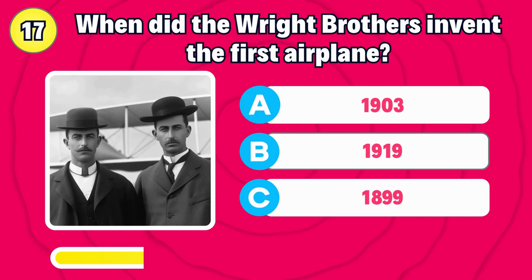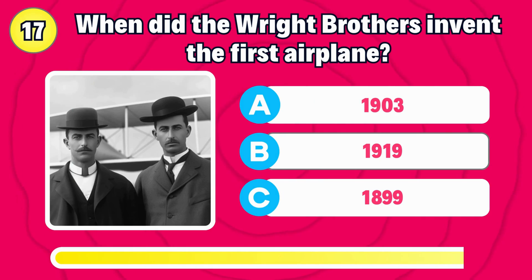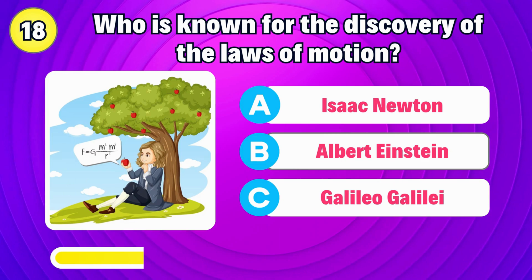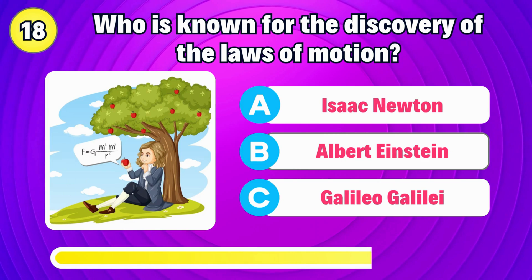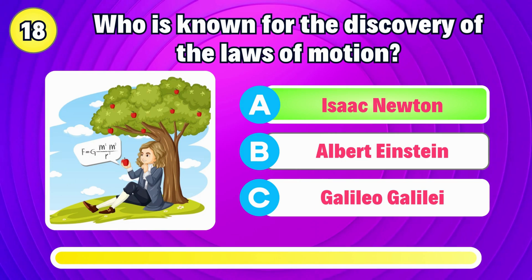When did the Wright Brothers invent the first airplane? Right, in the year 1903. Who is known for the discovery of the laws of motion? Right, it's Isaac Newton.